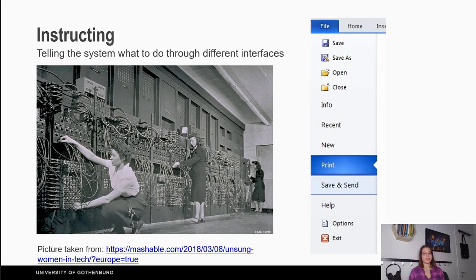On the right we can see a menu that exists now for Windows. So we can see that we can instruct the computer to save a file or to save a file with a different name with save as. So we're still instructing the computer to do something.